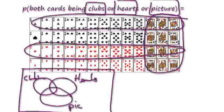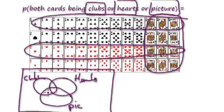How many clubs are there? There are 13 clubs. 13 clubs, but three are also picture cards. So I'm going to put the three in the overlap here and ten over in the clubs-only region.